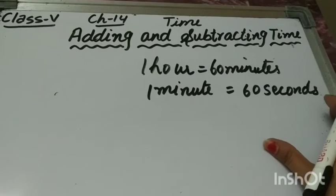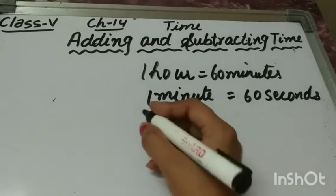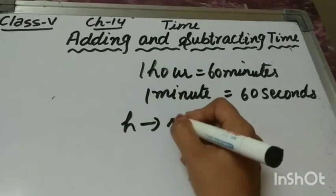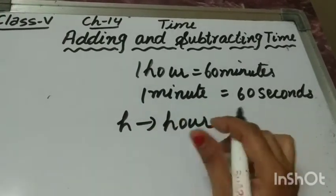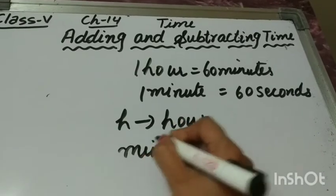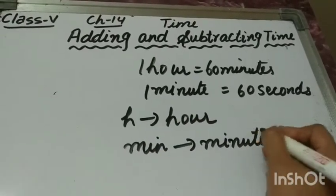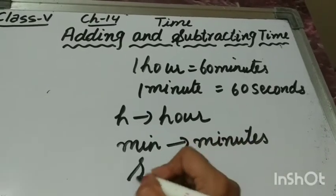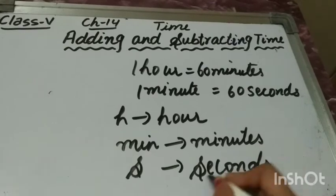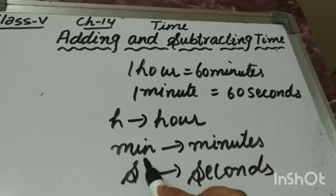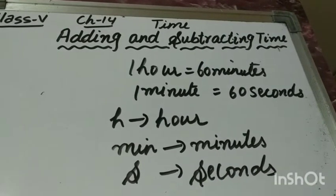1 hour is equal to 60 minutes and 1 minute is equal to 60 seconds, and their short forms are: H is the short form of hours, min is the short form of minutes, and S is the short form of seconds.